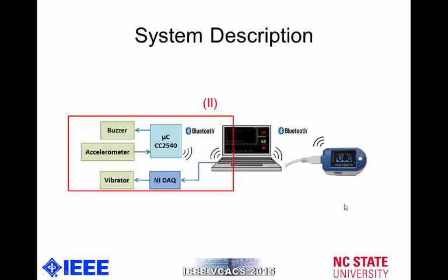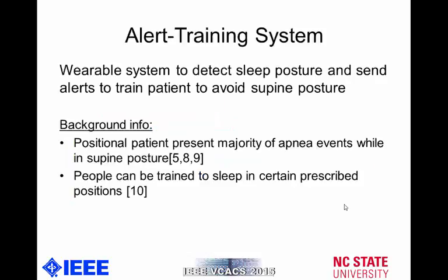Now let's move into the second part of the project, which is the alert training system. What we want to develop is a wearable system capable of detecting a sleeping posture and sending alerts to the patients to encourage them to avoid a supine posture. We found in literature that for supine-dependent OSA patients, they present the majority of their events when lying on their backs. In addition, we found that patients can be trained to sleep in certain prescribed positions.